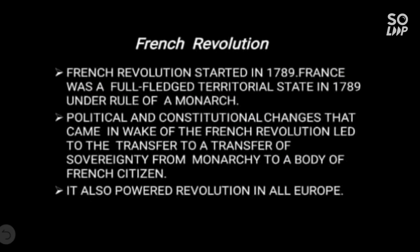If you see the first point: the French Revolution started in 1789. France was a full-fledged territorial state in 1789 under the rule of a monarch. At that time, France was ruled by Louis XVI.